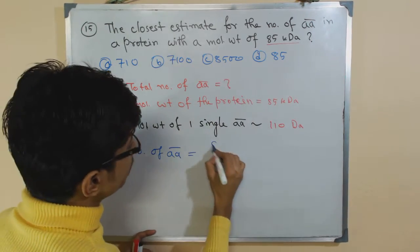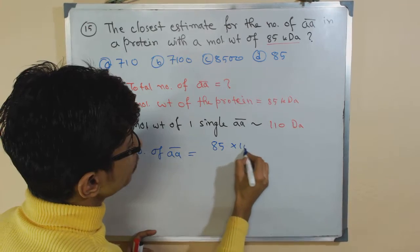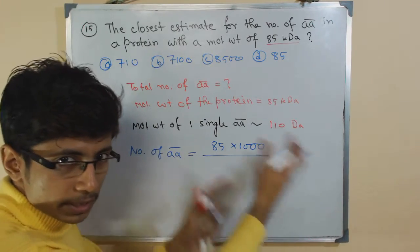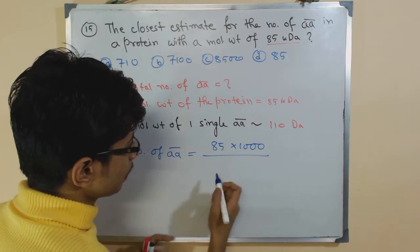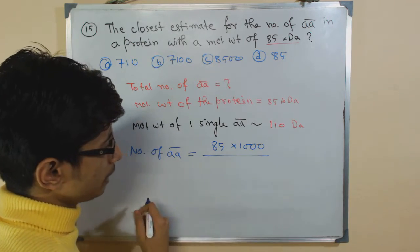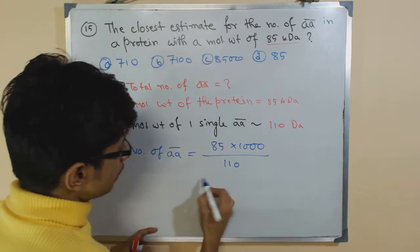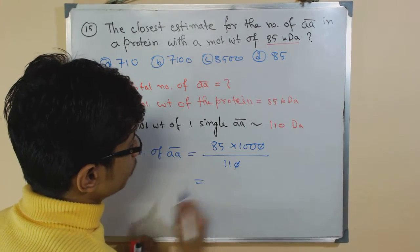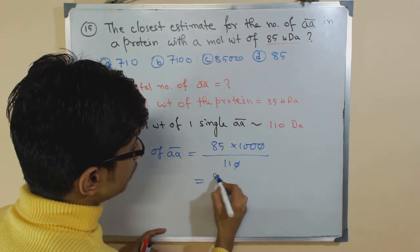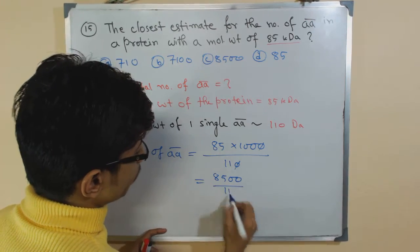It will be 85 kilodalton - we need to multiply by 1000 to convert this unit into dalton. So now it is 85 times 1000, which is 85,000 dalton, divided by 110. This will give you the answer: 85,000 by 110.